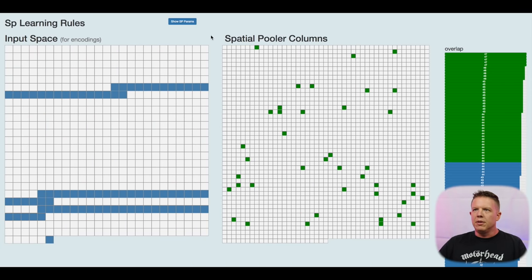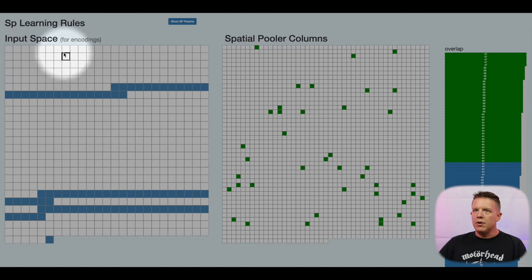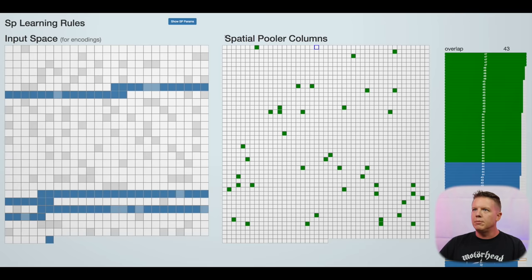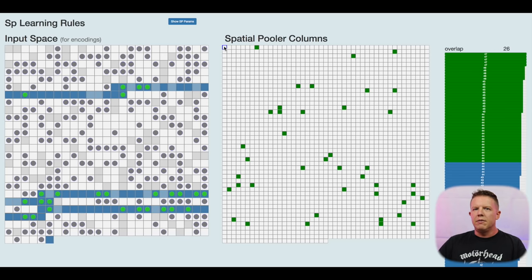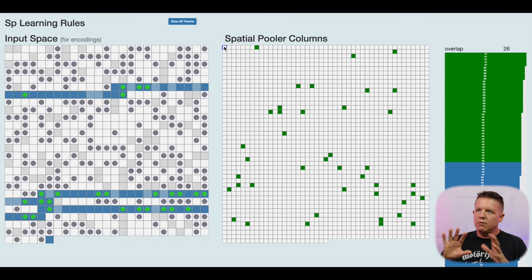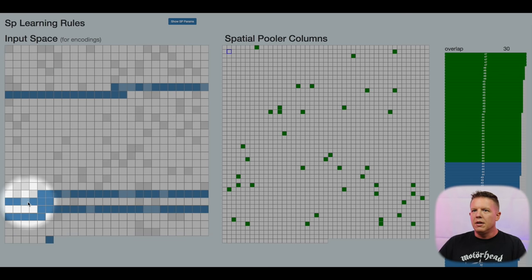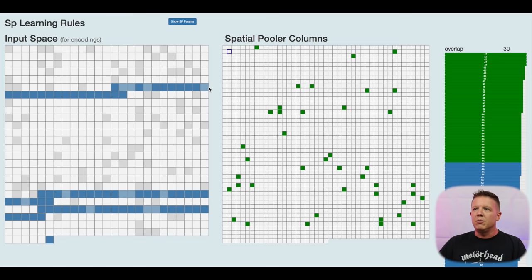Let's look at our first visualization. We're picking up where we left off last episode — I have an input space on the left and a spatial pooler's columns on the right. Each one of these columns has a very specific relationship to that input space. This is a randomly initialized spatial pooler; it hasn't learned anything yet. We're viewing an example input encoding, similar to encodings we've dealt with earlier, and asking: how would the columns learn to represent that input?